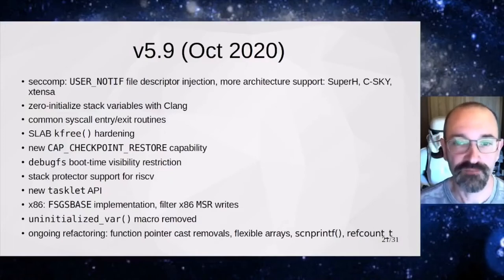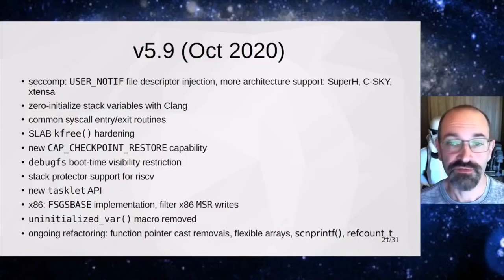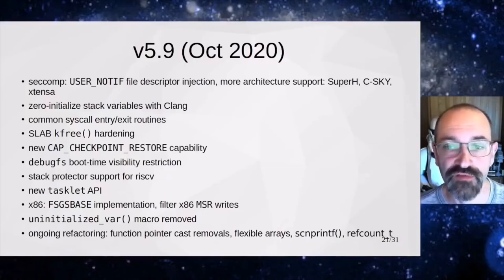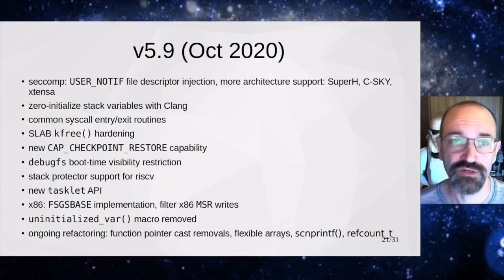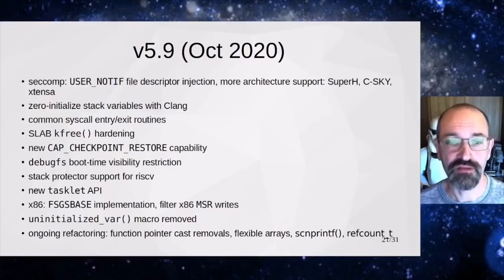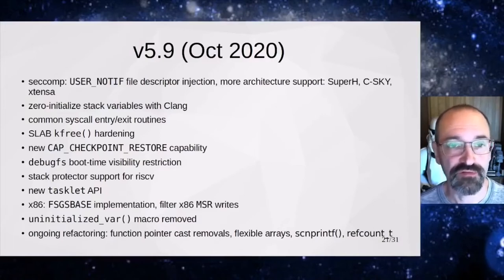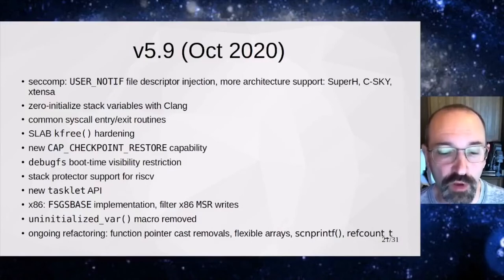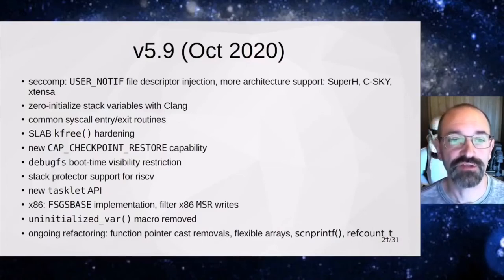With 5.9, seccomp gained the ability — via user notification filtering — to actually inject file descriptors into the seccomp process. The monitor could find places where it needed to hand back a file descriptor, as opposed to just saying 'no, you can't do that.' We gained three more architecture supports for seccomp — I think the most we'd ever had in one release. Clang stack variable auto-initialization support was added so we can zero-init stack variables, making that entire class of uninitialized stack variable just go away. There was a huge rewrite of the syscall entry and exit routines — normally very architecture-specific — collecting all that into one place where common code and fixes can be done correctly, also providing a single location for future syscall changes.